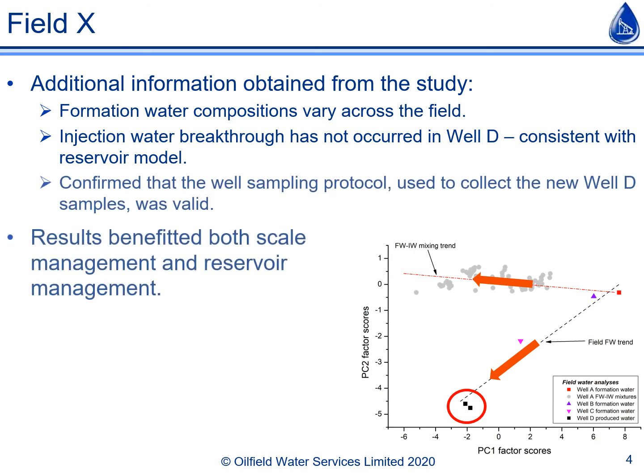Finally, the results confirmed that the protocol used to obtain representative well D samples was successful, and so could be used in future to obtain further samples from this well to check, for example, for injection water breakthrough. Although this study obtained the results required, it's worth mentioning that there are well testing methods that can be combined with produced water sampling that would allow the produced water composition for well D to be calculated without shutting in well A, and these methods would have reduced the deferred oil costs in this case.